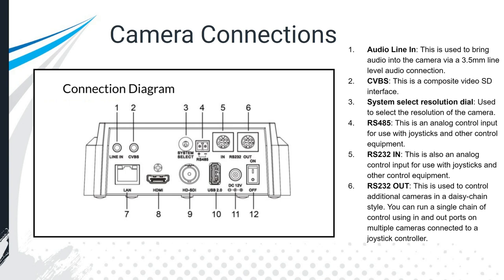Number four is RS-485, and numbers four, five, and six — RS-485 and RS-232 — are very similar analog control cables. We'll look more in depth at these in the video about joystick controllers, because most people use these analog controls for joysticks.